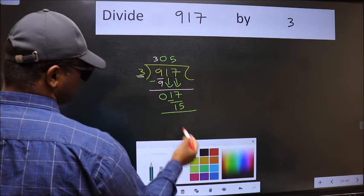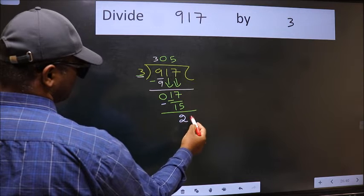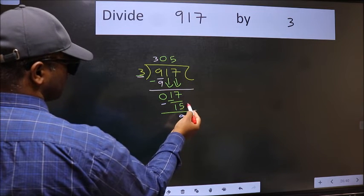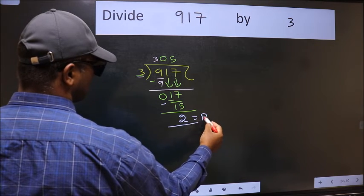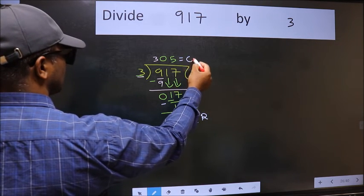Now we should subtract. We get 2. No more numbers to bring it down. So we stop here. This is our remainder and this is our quotient.